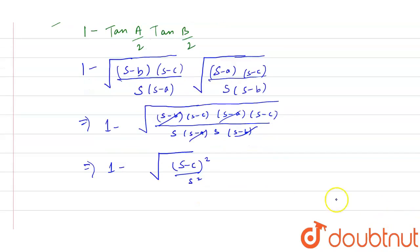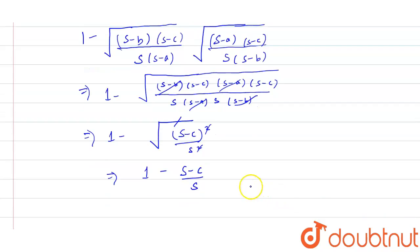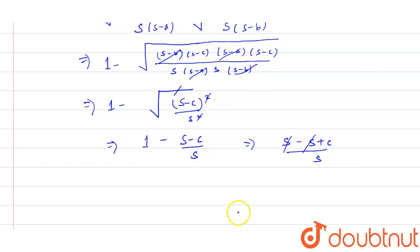The square root is cancelled with the square. So we get this equals 1 minus s minus c divided by s. This will equal, if we take LCM, s minus s plus c divided by s.